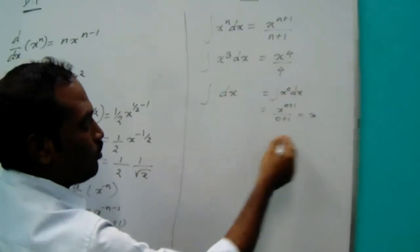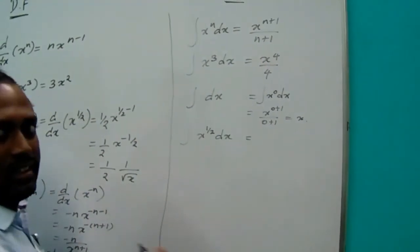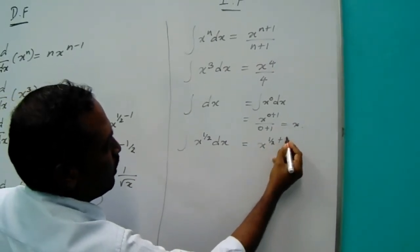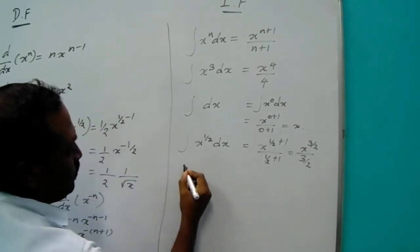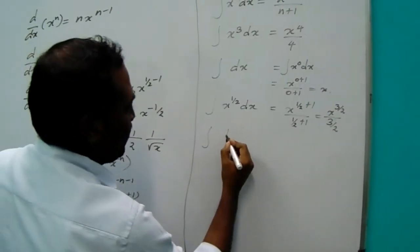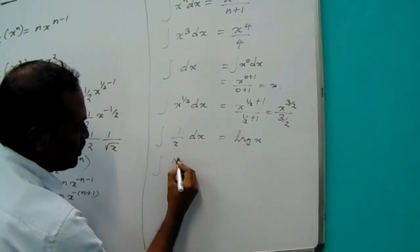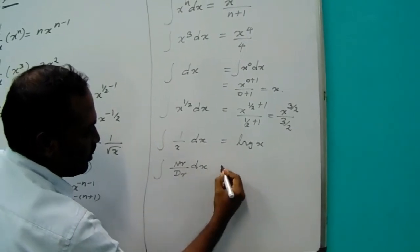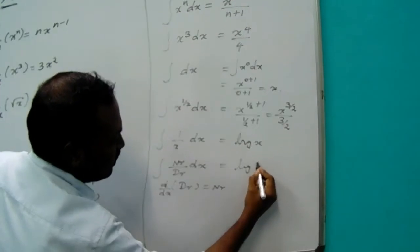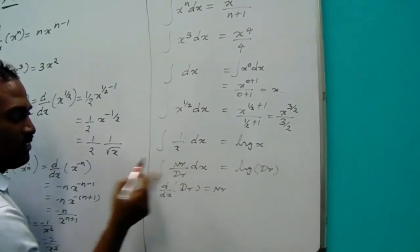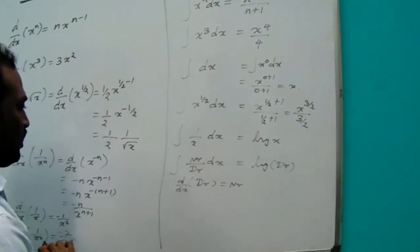The integral of x^(1/2) is x^(1/2 + 1) divided by (1/2 + 1), which gives x^(3/2) divided by 3/2. This equals (2/3)x^(3/2). Also, the integral of 1/x: when the numerator, after differentiation with respect to x, equals 1, it is the log of the denominator — so the integral of 1/x is log x.